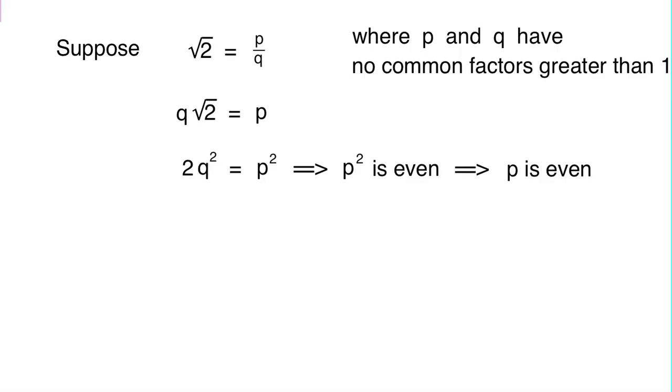And if p is even, what does it mean to be even? Again, it means that you're 2 times some other number, so we could say that we can write p is equal to 2k for some integer k, integer means whole number, p is equal to 2k.